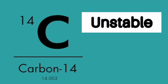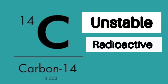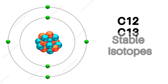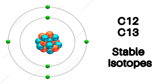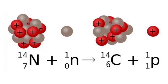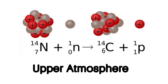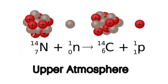Carbon-14 is an unstable and weakly radioactive isotope of the element carbon. Carbon-12 and carbon-13 are the stable isotopes. Cosmic ray neutrons in nitrogen-14 atoms have the effect of constantly forming carbon-14 in the upper atmosphere.